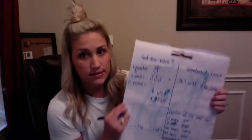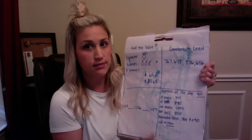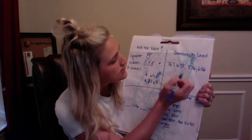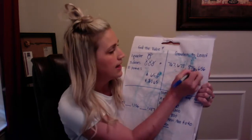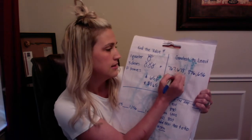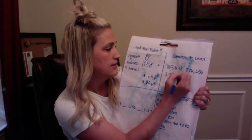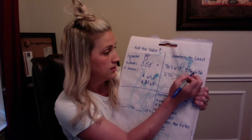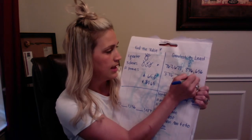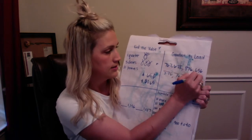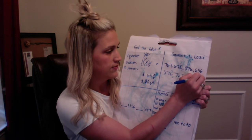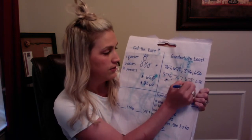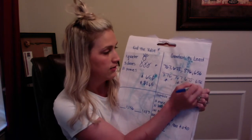Okay, greatest to least — my largest number to my smallest number. My largest number is 876, and then 767, 678, and 656. You can give yourself a star for each of those that are in the correct position.